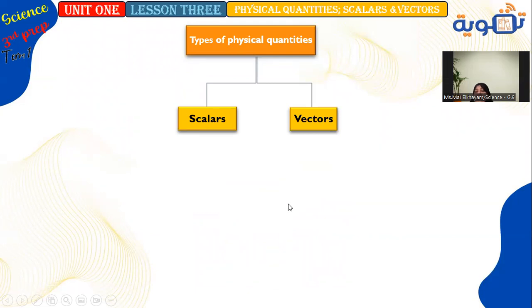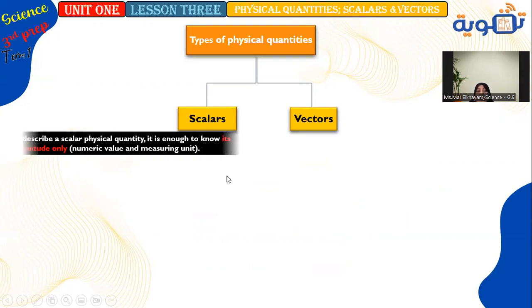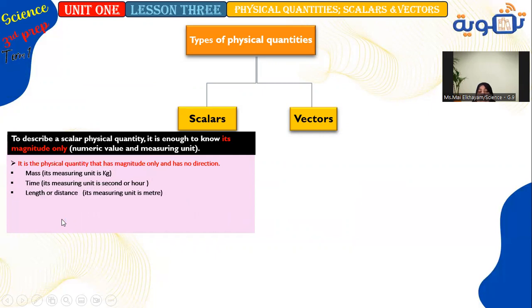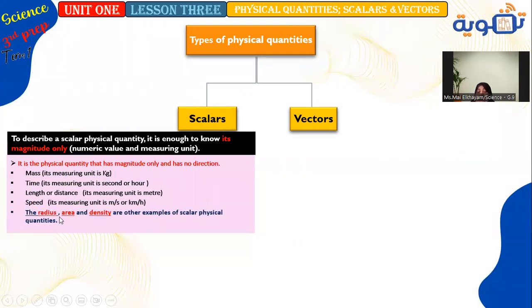Unit 1, Lesson 3: Scalar and vector quantities. A scalar physical quantity is described by its magnitude only — the numeric value and measuring unit. Examples of scalar quantities include: mass (kg), time (seconds/hours), length or distance (meters), speed (m/s or km/h), and also radius, area, and density.